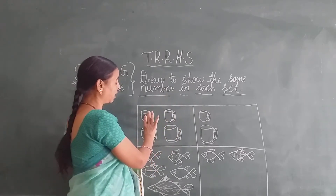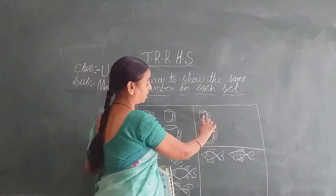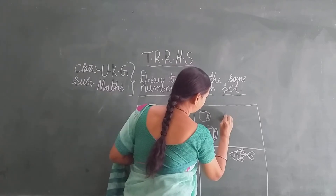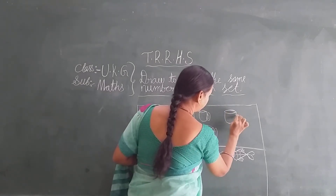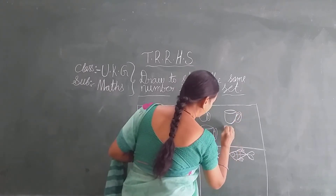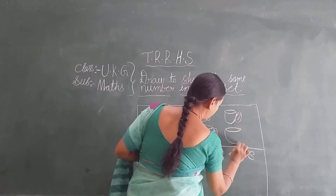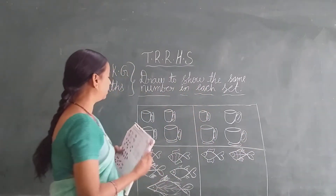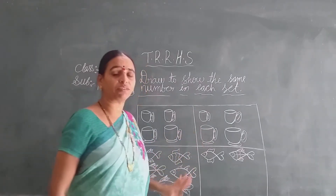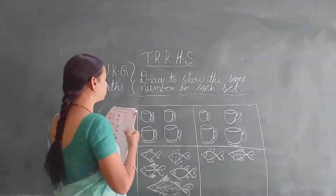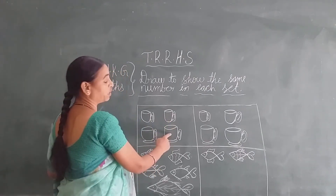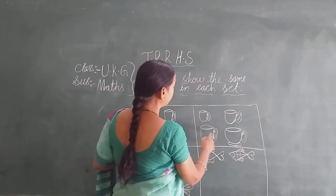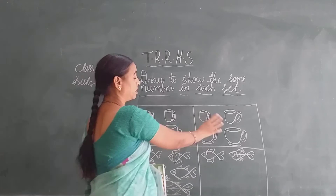1, 2 are there, so 3 and 4 we have to draw. Look at here — 1, 2 are there, so 3 and 4. Now look at here — in both the boxes, the pictures are same or different? Yes, same! Now count: 1, 2, 3, 4 pictures in this box. 1, 2, 3, 4. Now this is same.